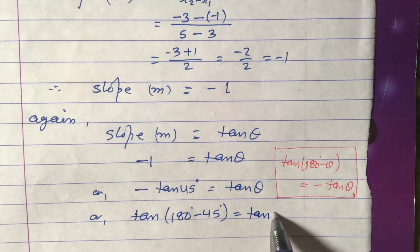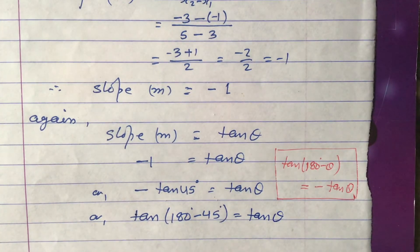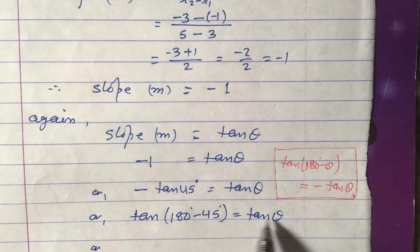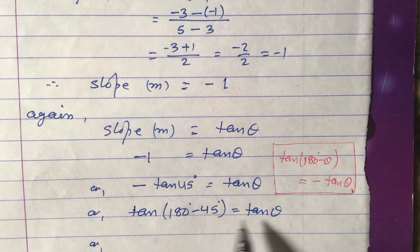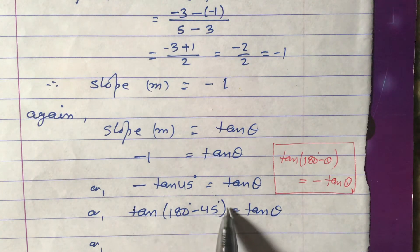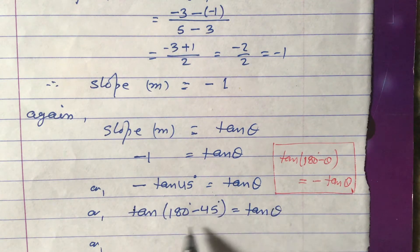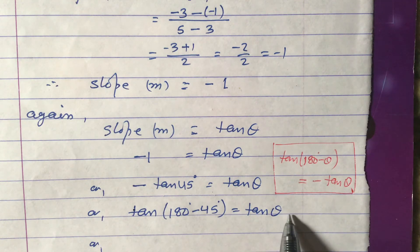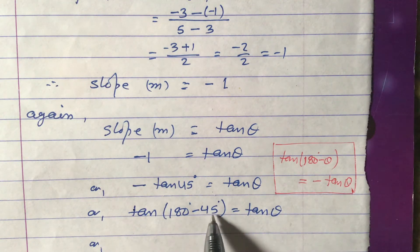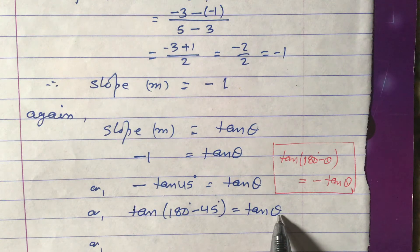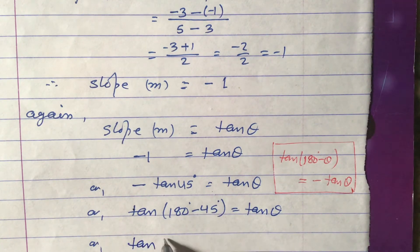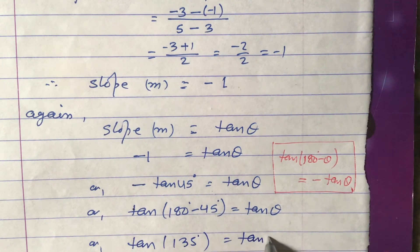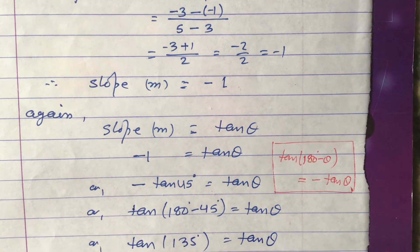Now comparing: we have tan 135° on one side and tan θ on the other. Since the tan terms on both sides are the same, we compare the arguments. So tan(180° - 45°), which is tan 135°, equals tan θ.